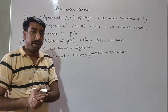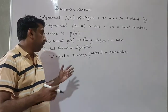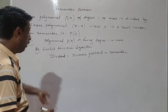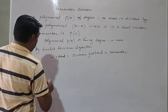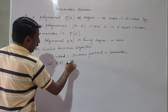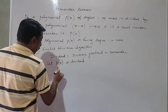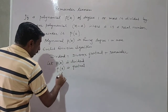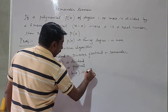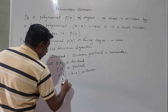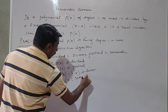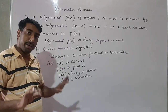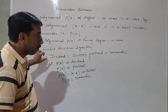Whenever we divide a number by another number, we get a quotient and a remainder. Here we are discussing algebra. P(x) is the dividend, Q(x) is the quotient, G(x) equal to x minus a is the divisor, and R(x) is the remainder. We have written down all four components of Euclid's division algorithm: dividend, quotient, divisor, and remainder.